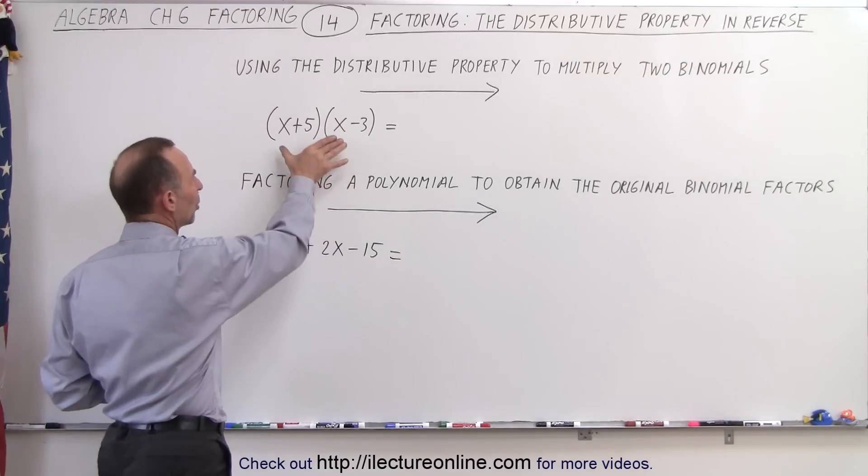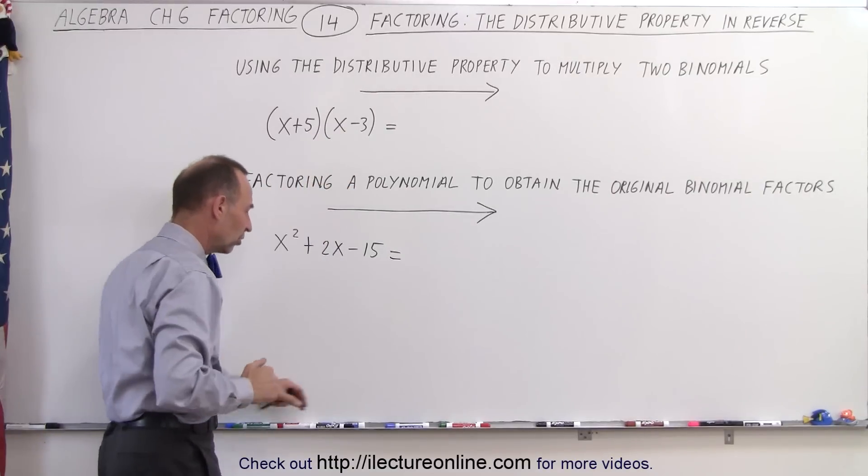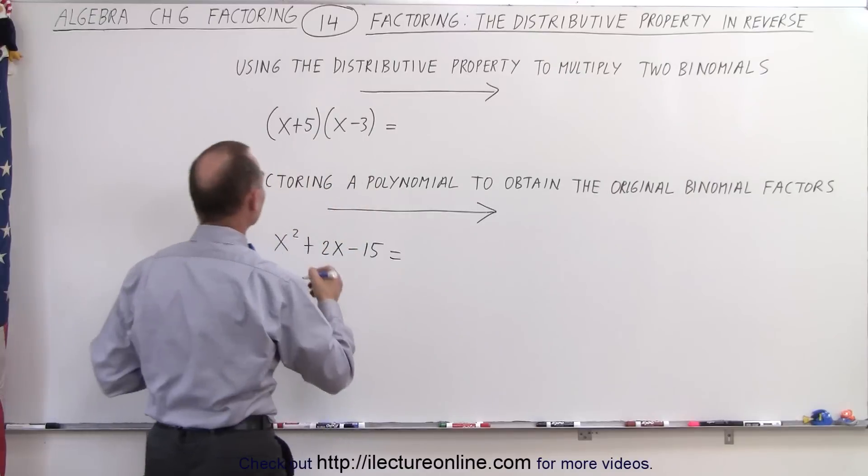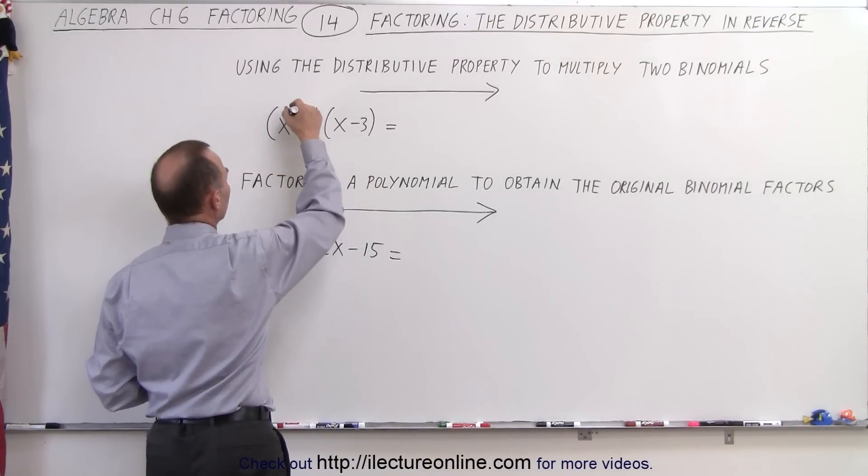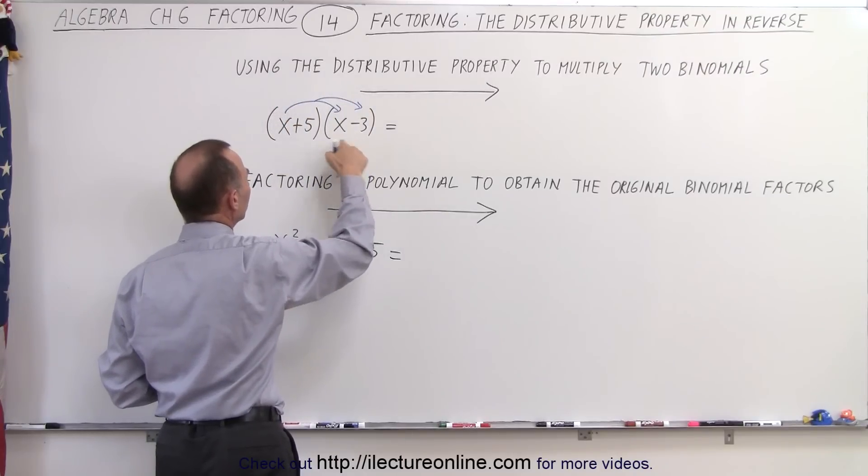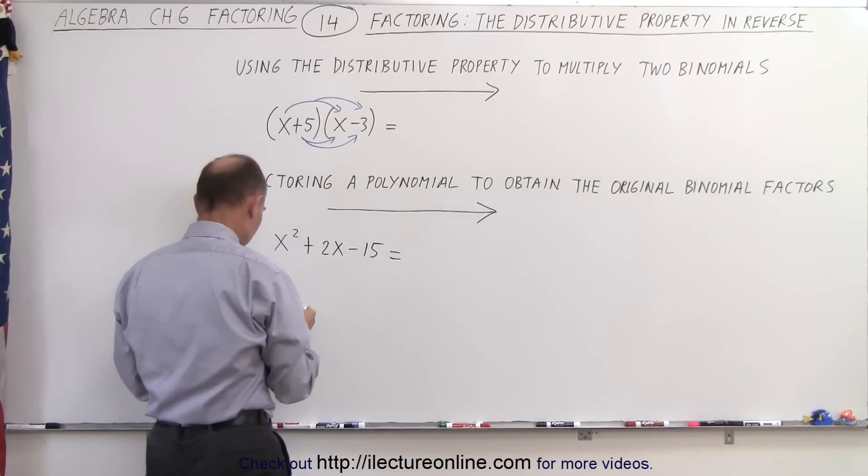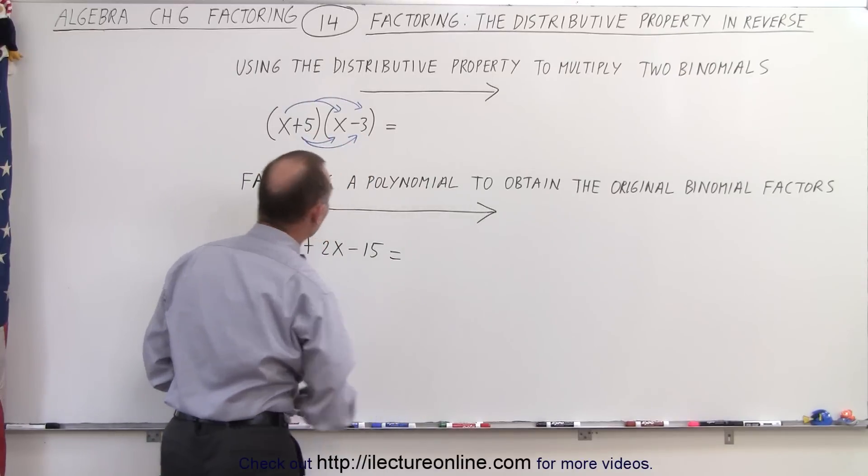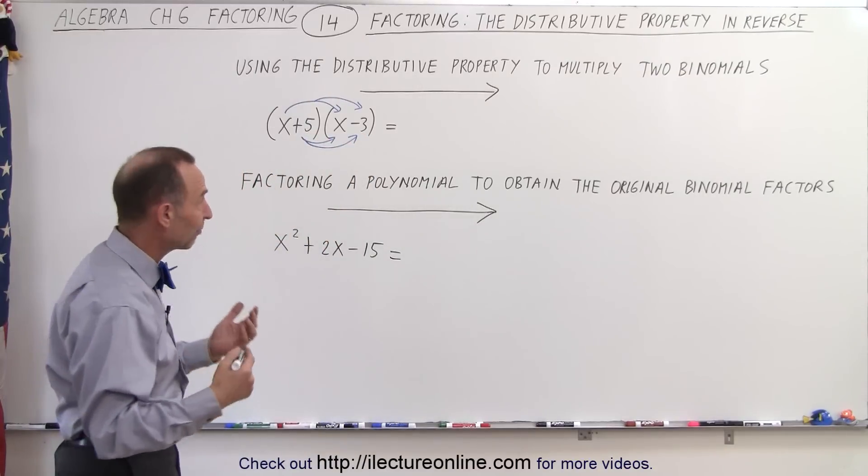So let's first go ahead and multiply these two binomials using the distributive property. We're going to take the first term here and multiply times each of the two terms in the next binomial. Then we take the second term and multiply it by each of the two terms in the next binomial. So we multiply four times.